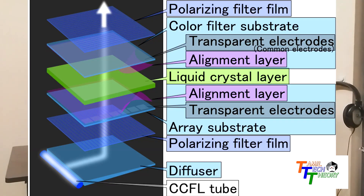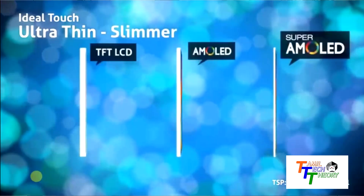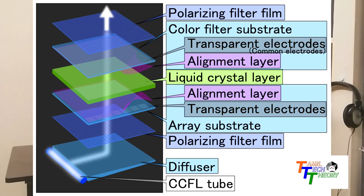In an LCD display, there are many layers. In the light of this display, there is a primary light source. If you have a light source, you can use a cathode ray tube. You can also use a white layer, a diffuser, reflectors, and multiple layers.